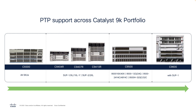Precision time protocol on the Catalyst 9000 switching families is supported starting from the 9300L up to the 9600 platforms, which are the core platforms. For more specific details on a per-platform basis, please refer to the PTP configuration guide of each platform, which can be found on the Cisco documentation page.